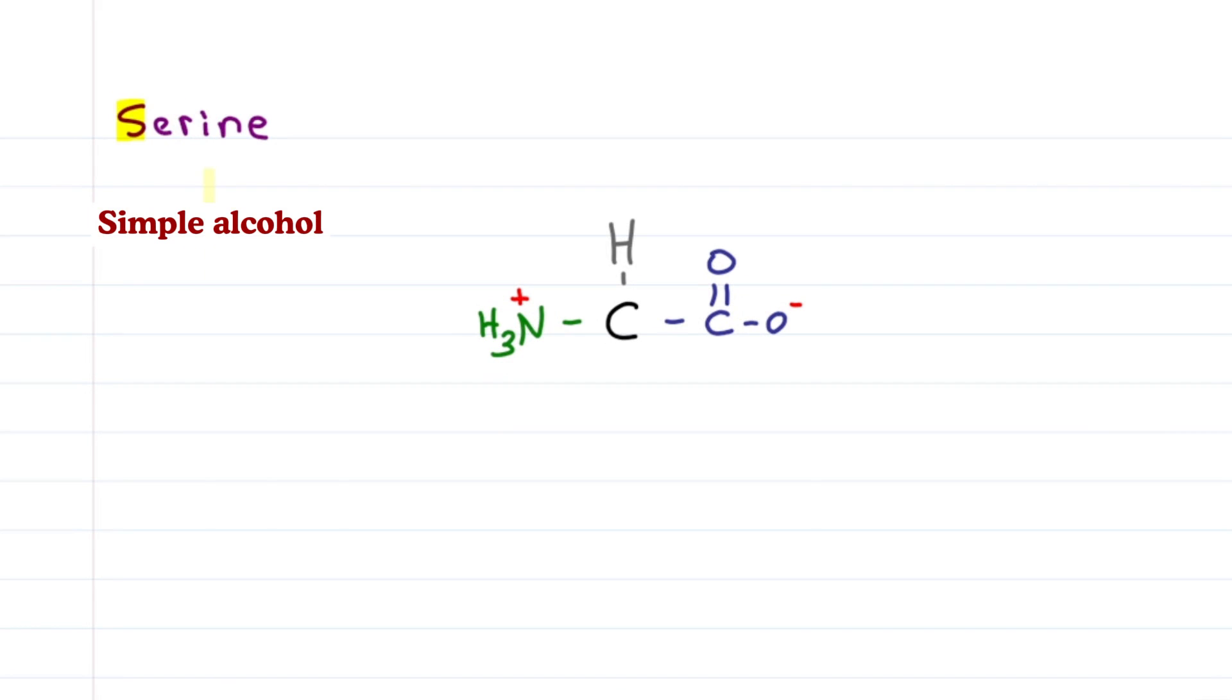Serine is a simple alcohol. If we always start with alanine, what's the simplest alcohol I can draw? Just add an OH. The first three letters are S-E-R, and the first letter is S. Simple, right? The OH group makes serine polar and hydrophilic.